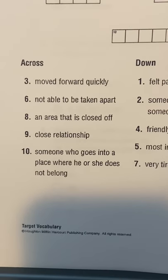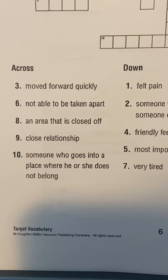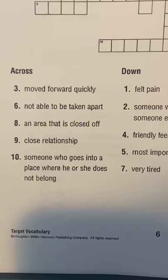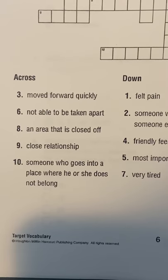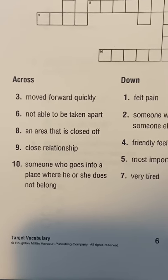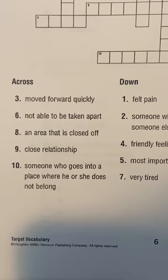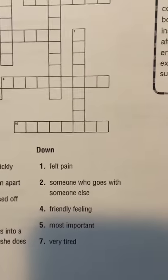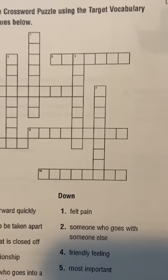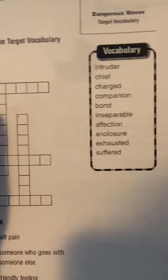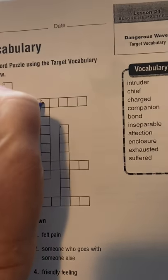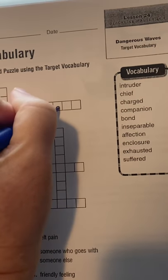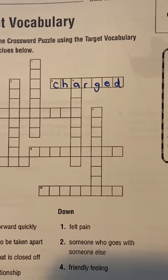Number three going across says 'move forward quickly.' Choose which word might go in that blank. I'll help you with that one — that word would be 'charged.' So you would write charged in the boxes.